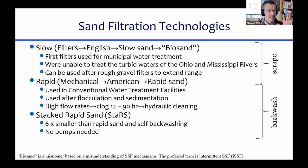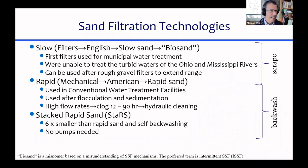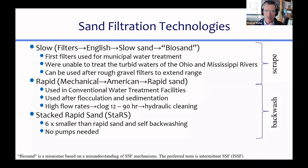That led to a little race between England and the United States. We started calling the filters invented here American filters and called what England had invented English filters. Eventually we realized we shouldn't name them by country but by a characteristic — the big difference being the velocity of water going through them. So they've been called slow sand and rapid sand ever since. Some folks now call slow sand filters 'bio sand,' which the speaker finds amusing and disappointing.